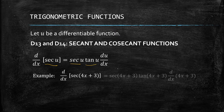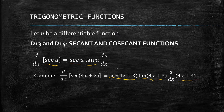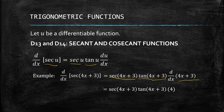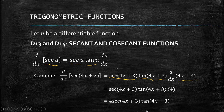We copy the secant to give itself, then we write the tangent with the same inner function (4x + 3), and then multiply by the derivative of u. The derivative of (4x + 3) is 4, so we rearrange to get 4·sec(4x + 3)·tan(4x + 3). You don't need to simplify further — just leave it as sec·tan.